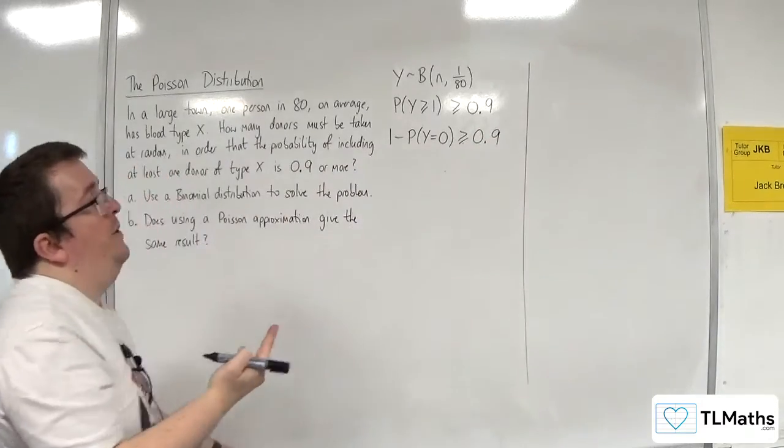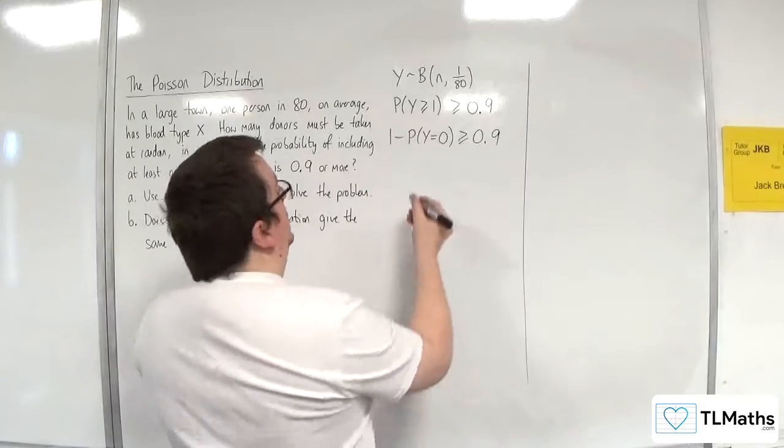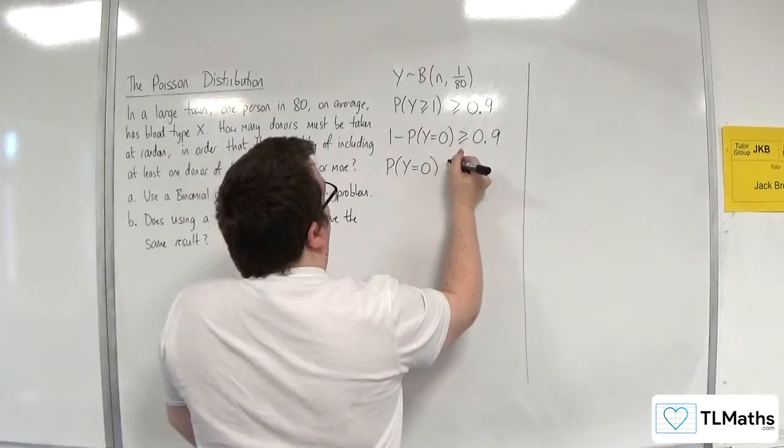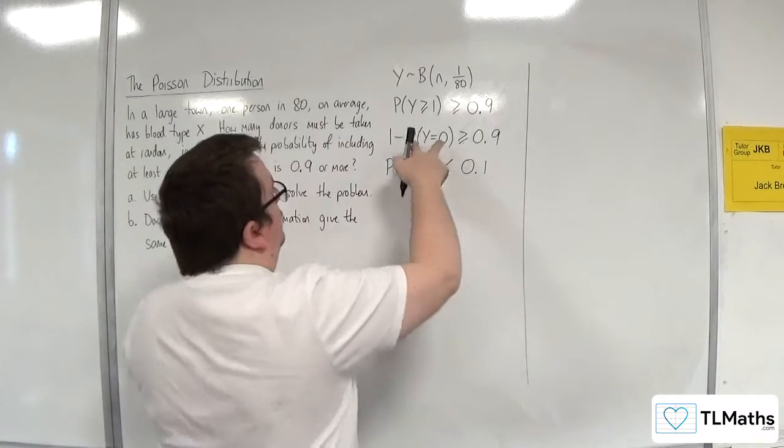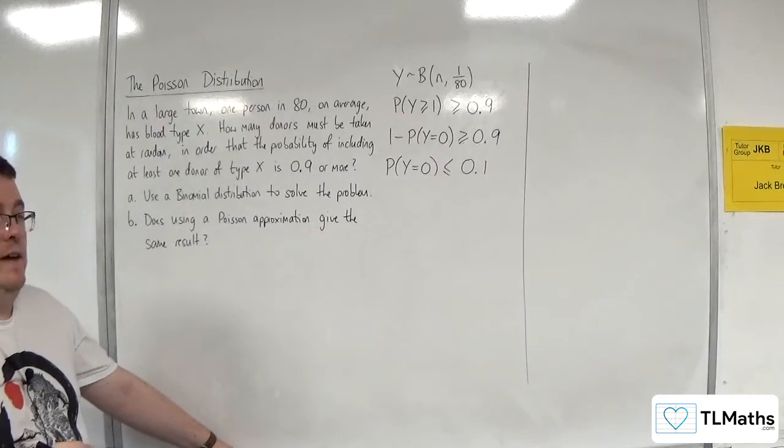Now if I subtract 0.9 from both sides and add probability of Y being equal to 0 to both sides, I can rearrange this to write probability of Y being equal to 0 has got to be less than or equal to 0.1. So I've moved on to the other side, so I've taken 0.9 from both sides.